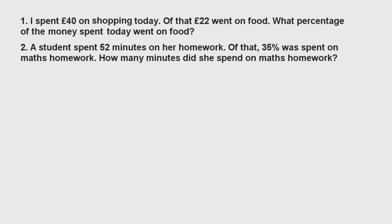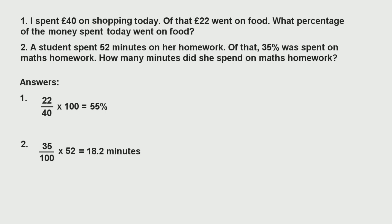Now I'll give you a couple of questions — you can pause the video and practice, then I'll give the answers. Question one: I spent £40 on shopping today; £22 went on food. What percentage went on food? We do 22 divided by 40 times 100 and get 55%. Question two: a student spent 52 minutes on homework; 35% was spent on maths. How many minutes on maths? 35% is 0.35, so 0.35 times 52 gives us 18.2 minutes.